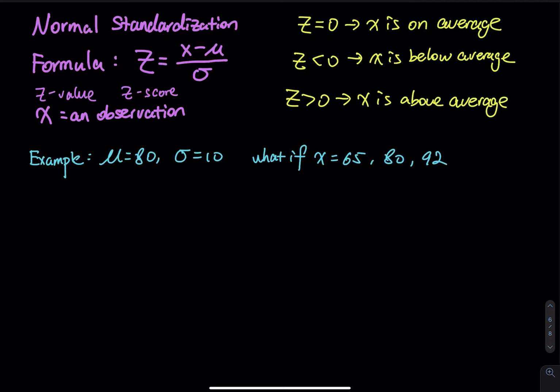So if z equals 0, that means x is on average. Z is less than 0 is below average, greater than 0 is above average.